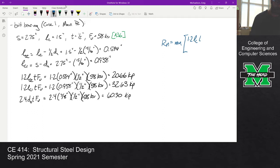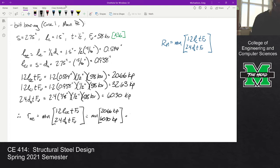Remember our capacity expression is the minimum of this and this for bolt bearing. Therefore we have rn_e which is the minimum of 20.66 kips and 60.90, which is clearly 20.66.